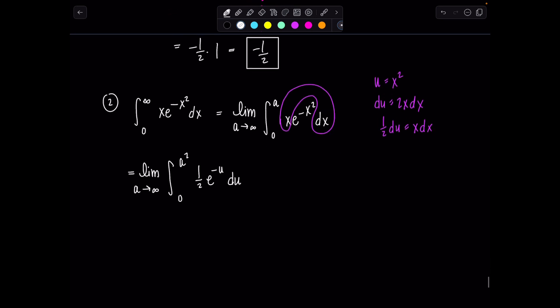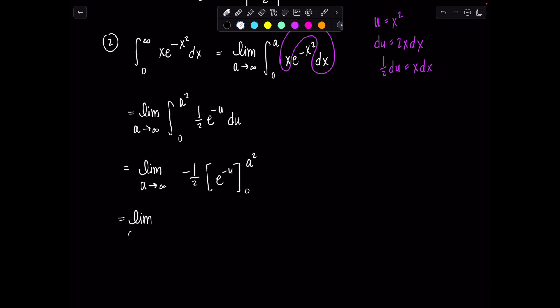And then, the rest of the problem falls into place similarly. So, this is limit A goes to infinity. Antiderivative of e to the negative u would be negative e to the negative u. So, I'll put the negative outside with the one-half. Then, I have e to the negative u evaluated from zero to A squared. Good. Then, this is limit A goes to infinity negative one-half times e to the negative A squared minus e to the zero. And then, remember that hint I told you when you have a term with a negative exponent and you're trying to take limits, I would rewrite it in the denominator. Get rid of the negative exponent. So, limit A goes to infinity negative one-half times one over e to the A squared minus, that's one.